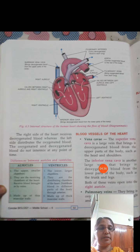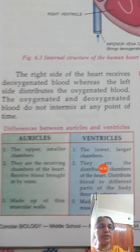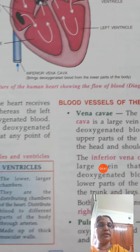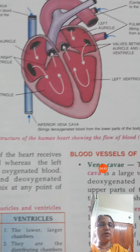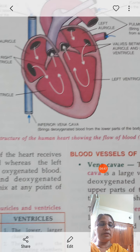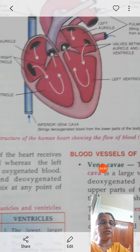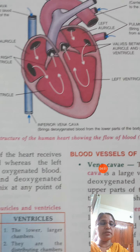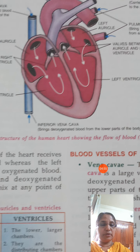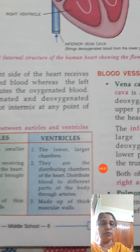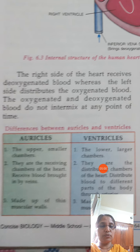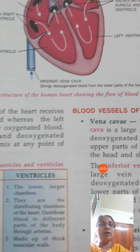Another important thing to notice is that the ventricles have thicker walls. When the ventricles contract, the blood has to reach all parts of the body, so the ventricles contract with great force. Therefore, they have a strong, thick muscular wall compared to the auricles.